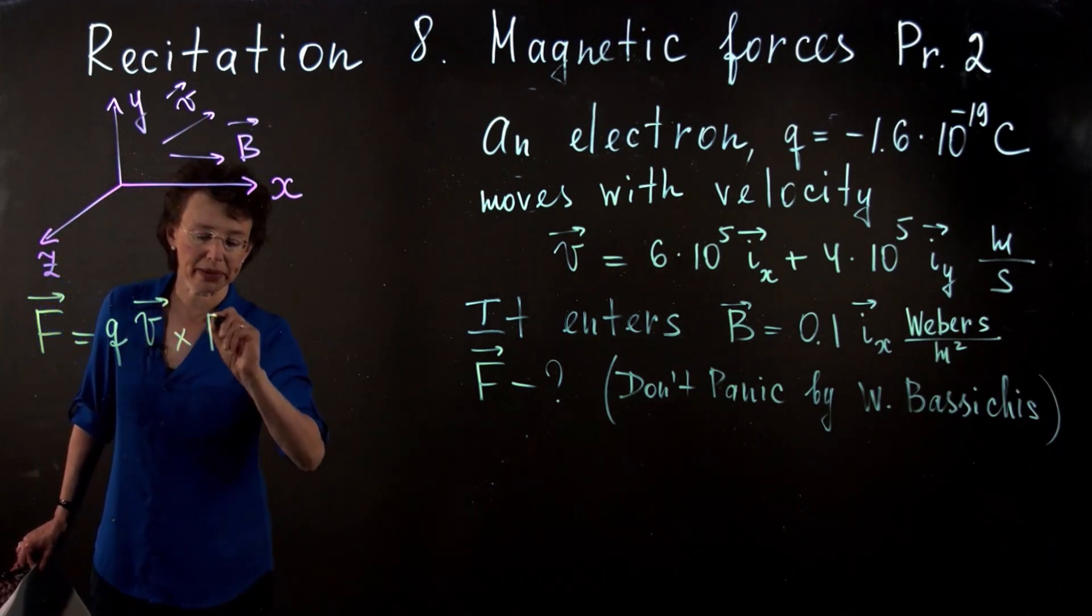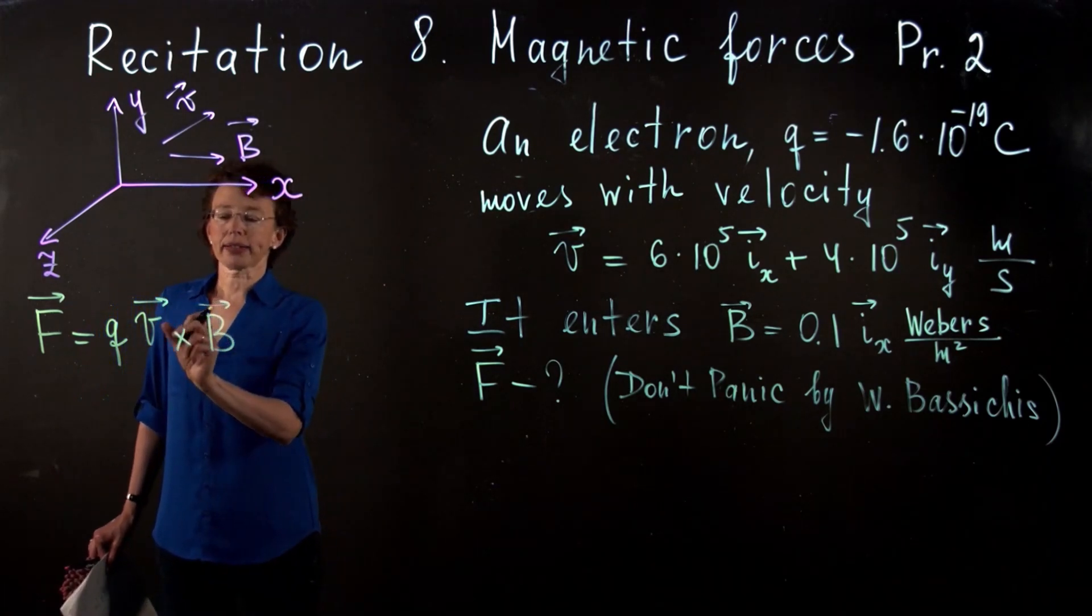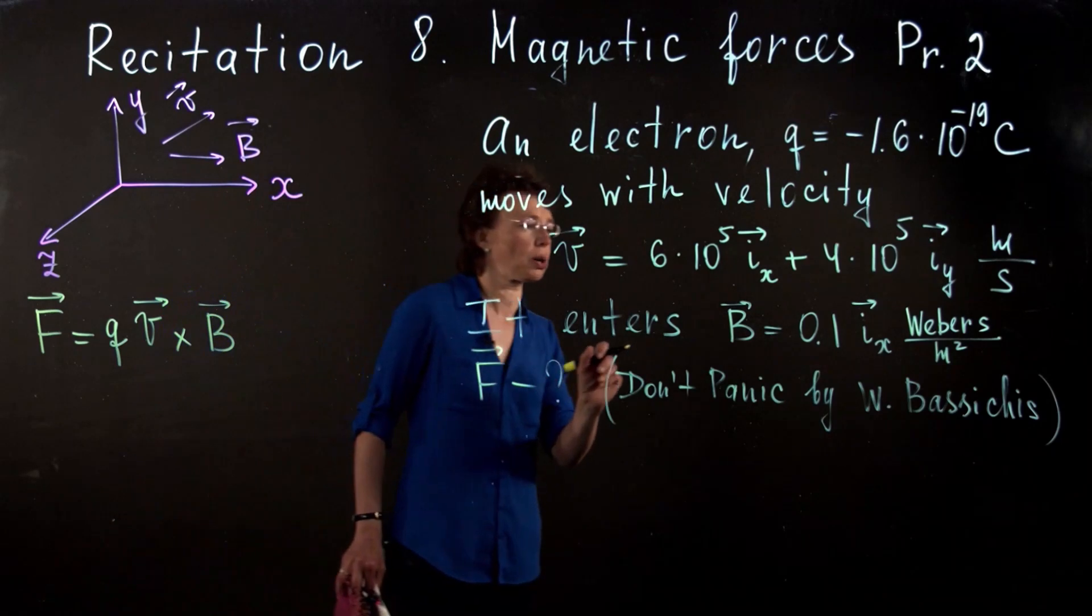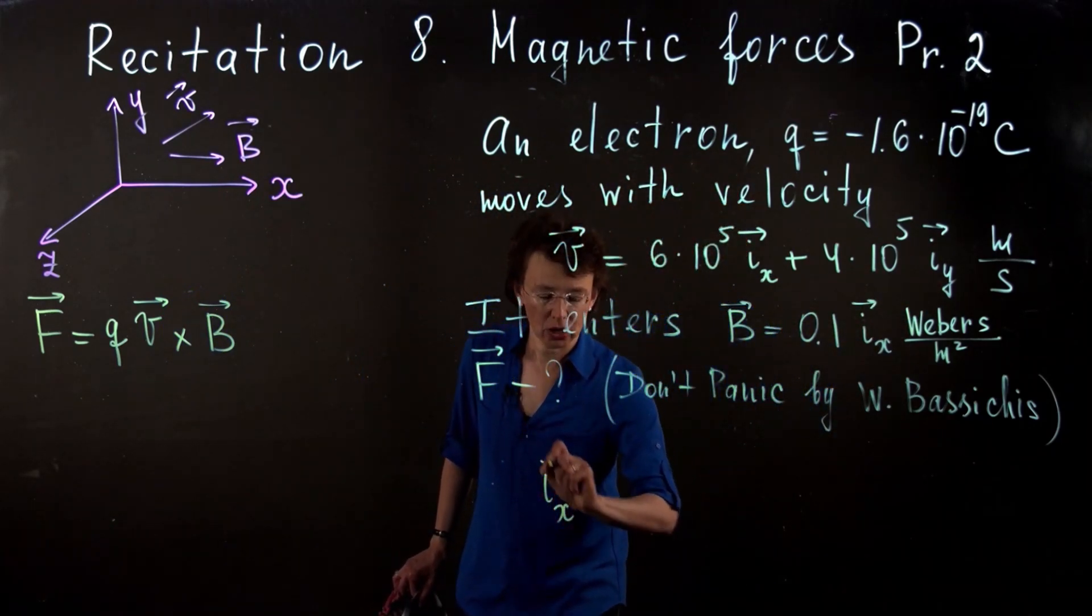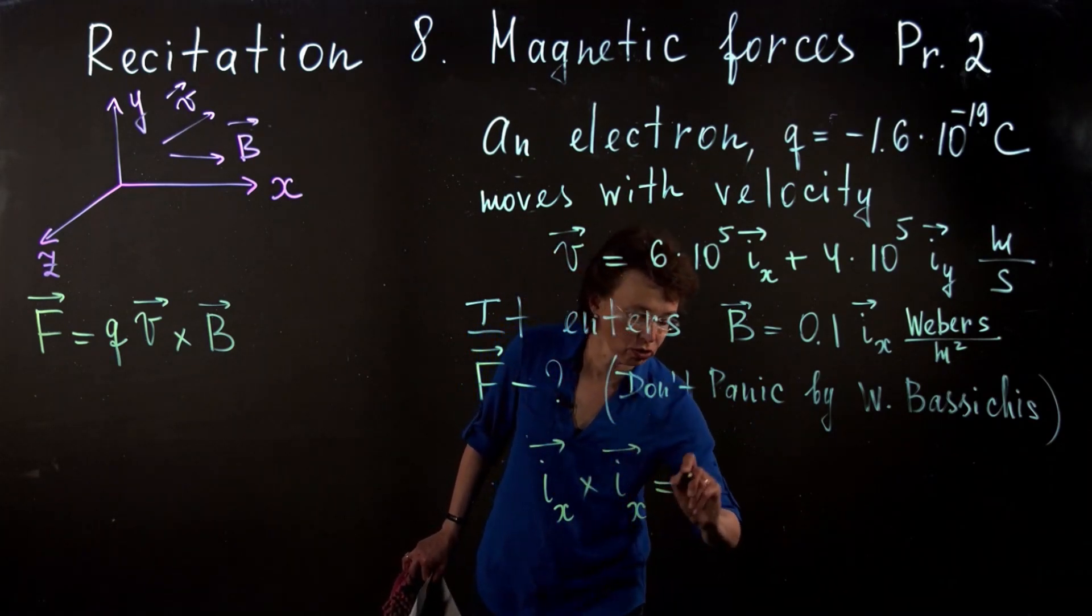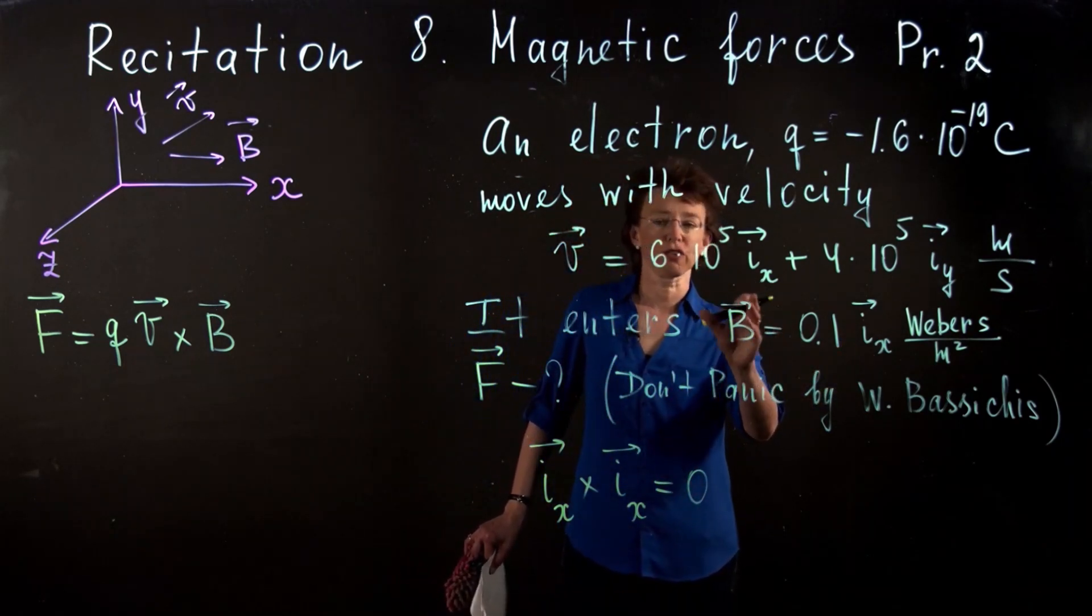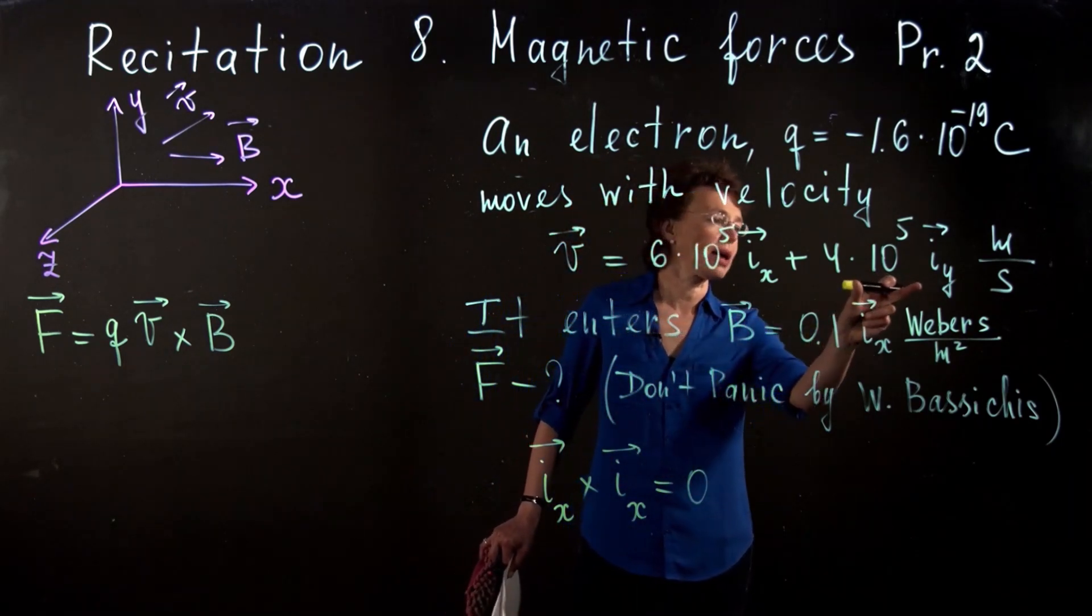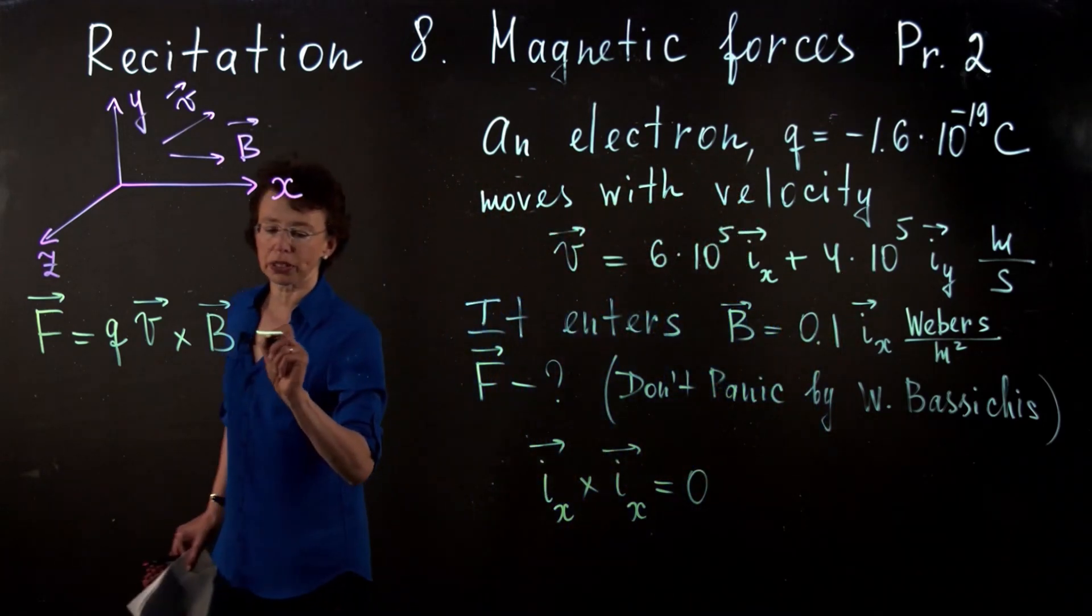B is along x. Velocity has two components ix and iy. ix cross ix will give me zero, so the ix component of velocity will give me zero force. All I'm interested in is the iy component of velocity.